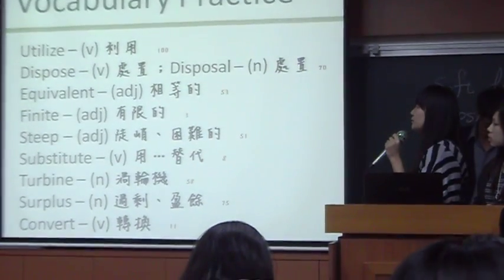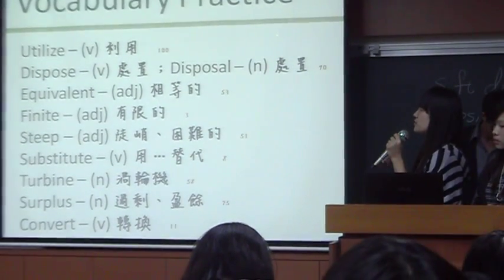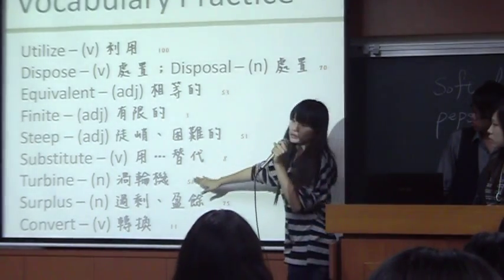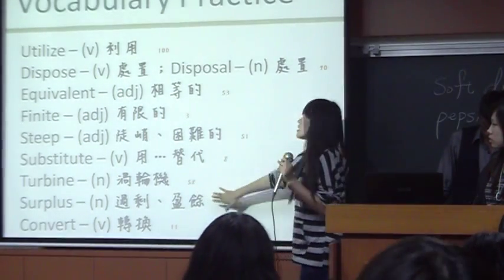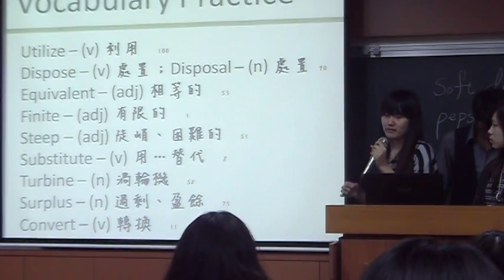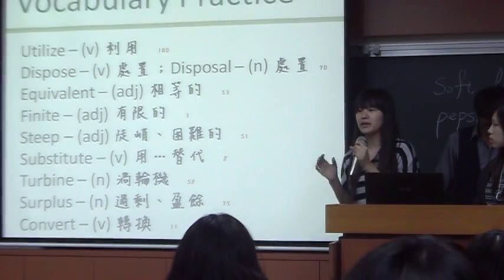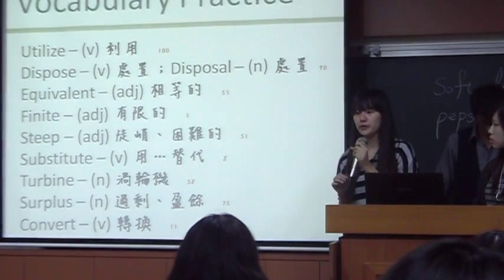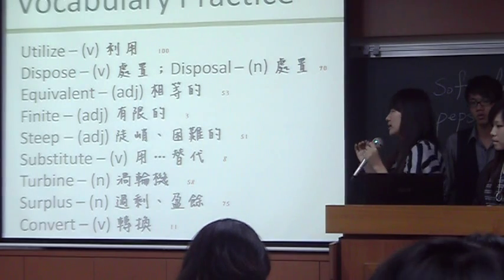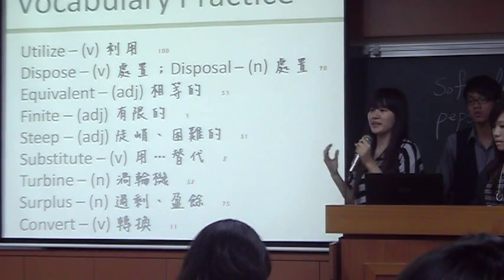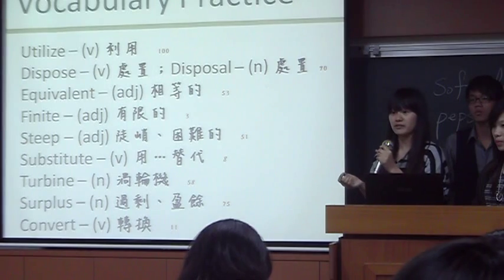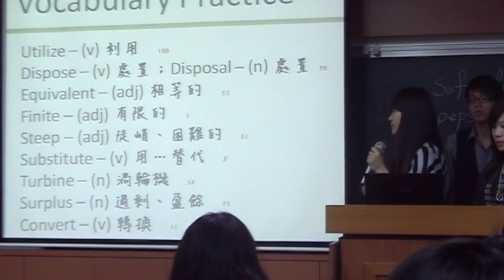And now I would like to explain the turbine. A turbine is a machine or engine that is powered by a wheel driven by water, gas, or air. Is that clear? Okay.